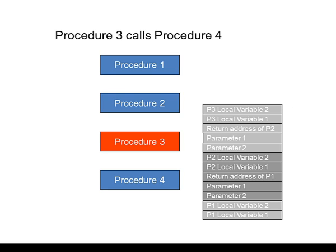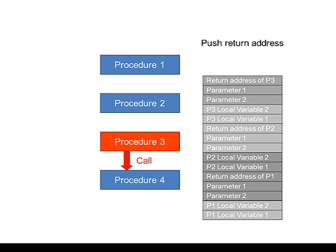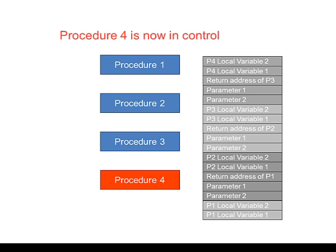When Procedure 3 calls Procedure 4, we see the same steps again. Any parameters which Procedure 4 is expecting are pushed onto the stack one by one. The return address of Procedure 3 is then pushed onto the stack, followed by any local variables which have been declared inside Procedure 4. Procedure 4 is now in control.